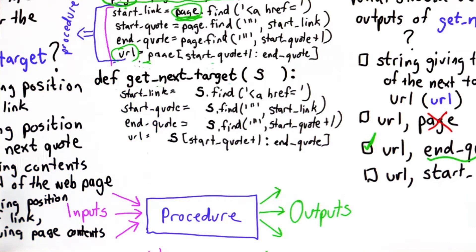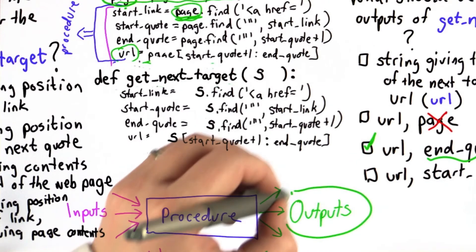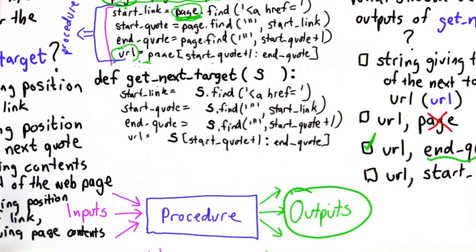So we're almost done. There's one big thing we have left to do, and that's how do we get the outputs. We said what we want the outputs to be is the URL and the value of end quote. We need some way of getting those back. And the way to do that is to use return.